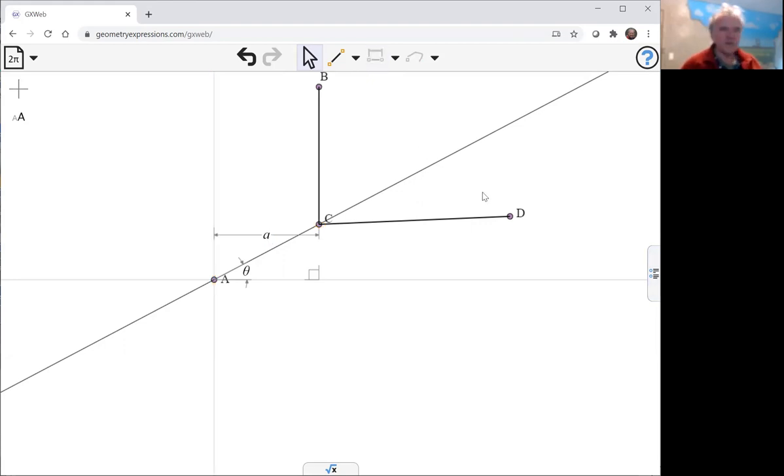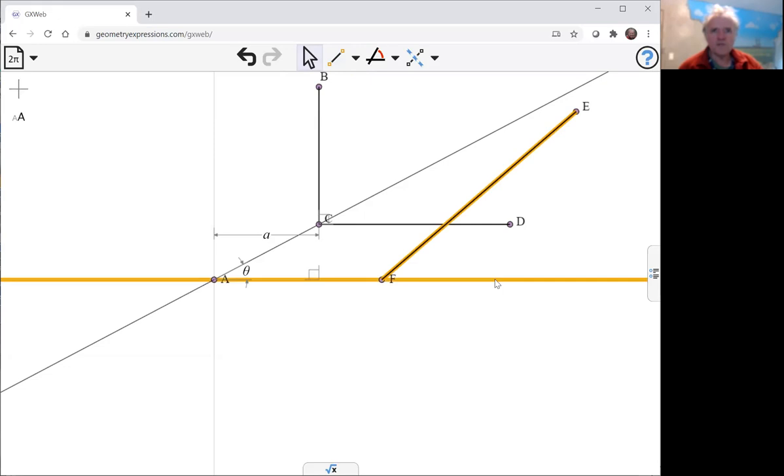We're now going to constrain this one to be at right angles. This line is going to join another line which is constrained to be at a given angle and a given location. So we're going to have that line, and we'll constrain it to be at 45 degrees.